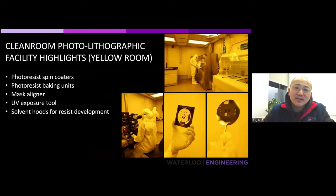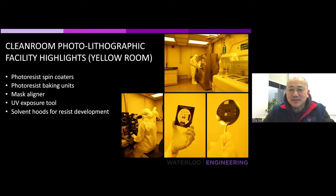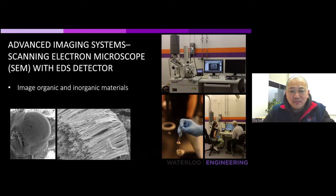This picture shows the photolithography area of the clean room — the room is all yellow because we work with light-sensitive photoresists and avoid certain wavelengths of light that could accidentally develop them and disrupt our patterns. We have photoresist spin-coater units, photoresist baking units, mask aligner UV exposure tools, and other equipment in this portion of the clean room.